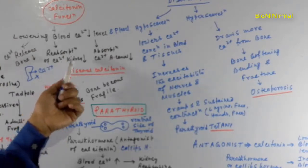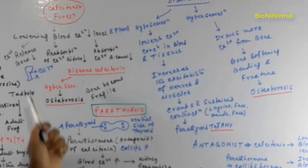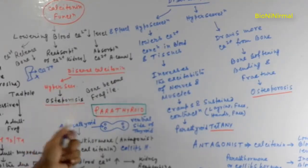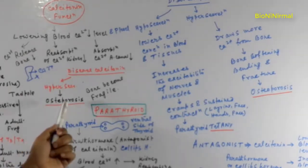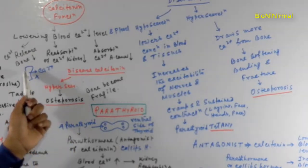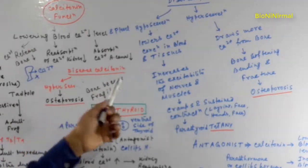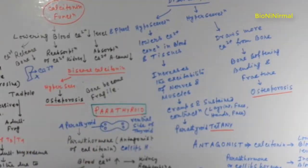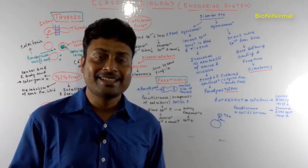Regarding the disorder of calcitonin: due to hyposecretion of calcitonin, a disease called osteoporosis occurs. Due to osteoporosis, calcium is released from the bone in large amounts, causing the bones to become fragile. This is the disease related with calcitonin.